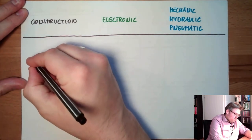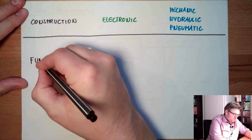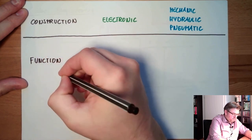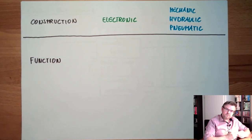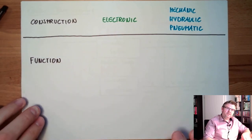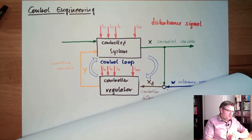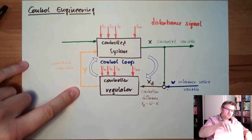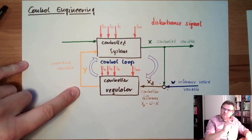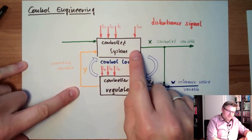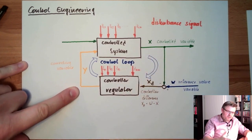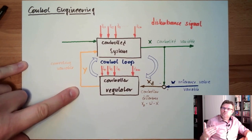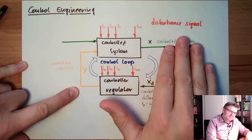Then we can talk about the function. Basically there are two different types of controllers. We have to look at the correcting variable. This control variable is always a continuous variable — it's the physical value I want to influence. In temperature, I can measure 22.1, 22.2, even 22.15, and every value in between. So this is a continuous variable.